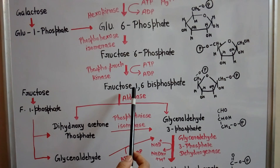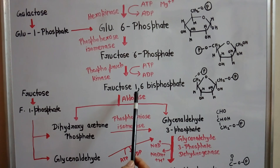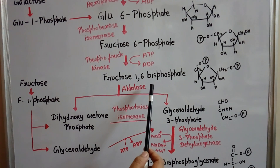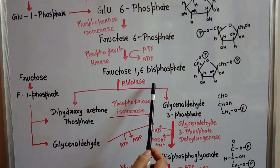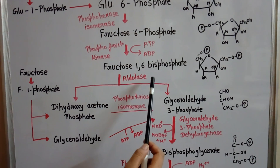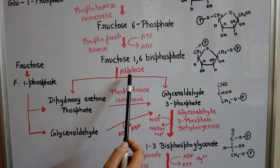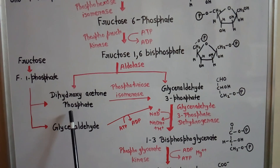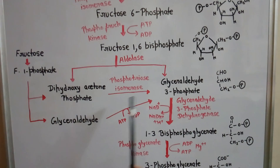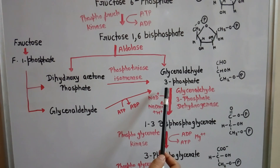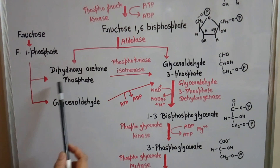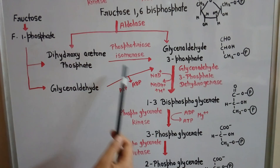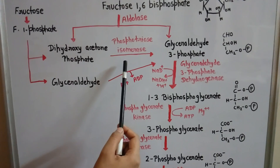Glucose and fructose-1,6-bisphosphate are both C6 molecules. The breakdown of fructose-1,6-bisphosphate takes place in the presence of the enzyme aldolase, producing two C3 molecules: dihydroxyacetone phosphate and glyceraldehyde-3-phosphate. Dihydroxyacetone phosphate can also convert to glyceraldehyde-3-phosphate in the presence of the enzyme phosphotriose isomerase.